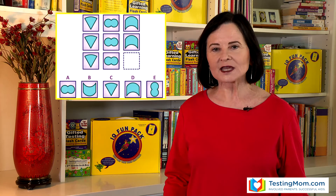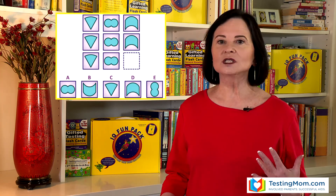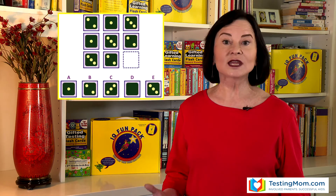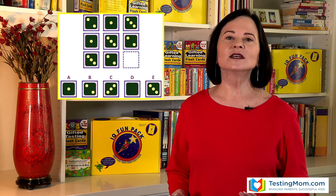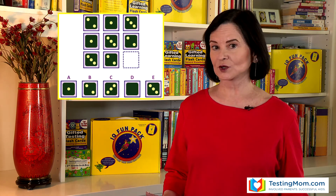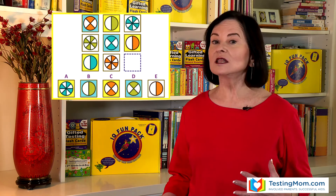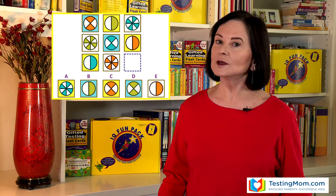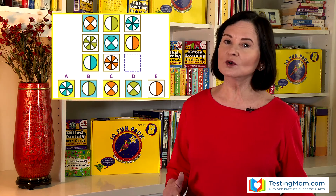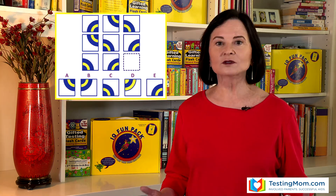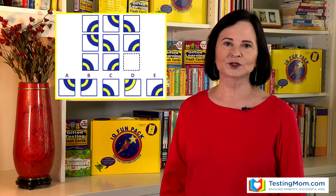We're talking about tests like the OLSAT, the NNAT, SAGES, KBIT, Stanford-Binet, Ravens Matrices and more. These tests are given all over the country for programs like New York City Gifted and Talented, LAUSD gate programs, Houston and surrounding suburbs GT programs, Chicago Public Schools, California gate programs and many more school districts.